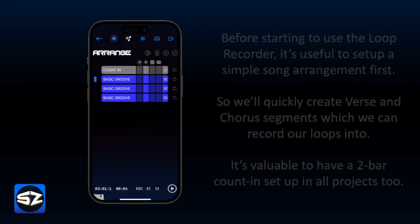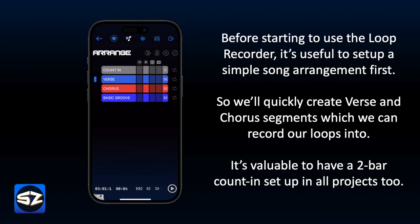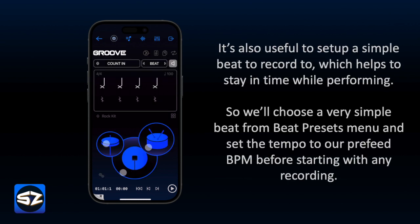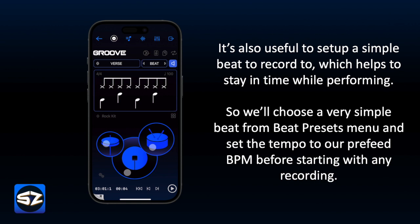Before starting to use the Loop Recorder, it's useful to set up a simple song arrangement first, so we'll quickly create verse and chorus segments which we can record our loops into. It's valuable to have a two-bar count-in setup in all projects too. It's also useful to set up a simple beat to record to, which helps to stay in time while performing. So we'll choose a very simple beat from the Beat Precepts menu, and set the tempo to our preferred BPM before starting with any recording.